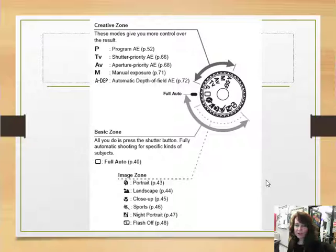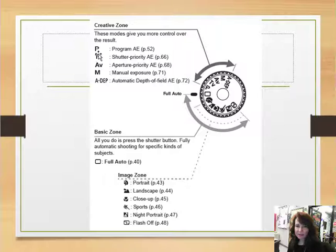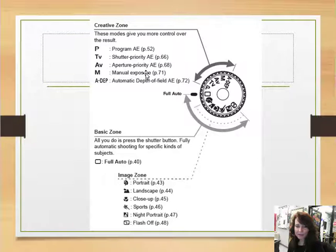If you have a point-and-shoot camera, you'll see options on your dial to choose from. P means program, TV is shutter priority, AV is aperture priority, M is manual. And full auto is usually green on the camera dial setting.